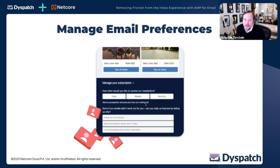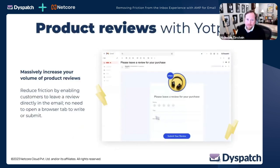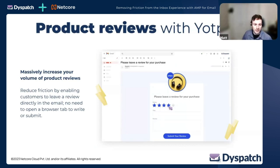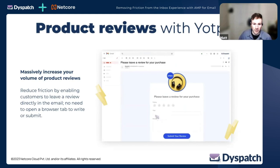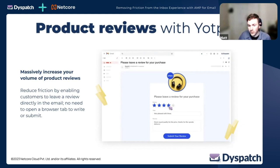There's no real downside because someone gets a great fallback if they don't receive the interactive experience. One of the things Dispatch does really well is connecting your AMP emails to all the other products and services in your tech stack. This is an example of doing product reviews with Yotpo in particular.